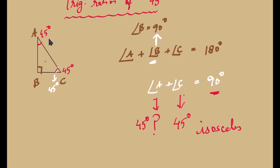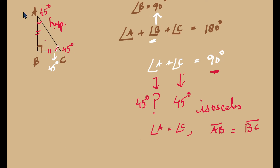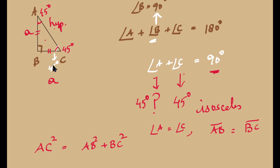Since angle A equals angle C, the sides opposite to those equal angles are equal. The length of side BC and the length of side AB will be equal to one another. If we assume the length of AB is equal to 'a', then the length of BC is also equal to 'a'.